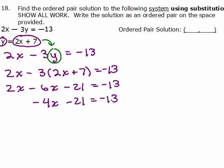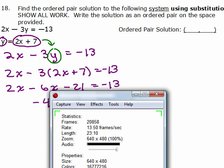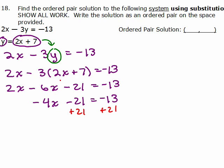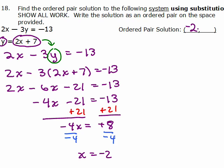Negative 4X minus 21 is negative 13. Now we can go ahead and add 21 to both sides. So that will give us negative 4X equals, I'm sorry, positive 8. So we're going to divide both sides by negative 4 and we get X is negative 2. Alright, so it looks like we've got the solution for X, it's negative 2.